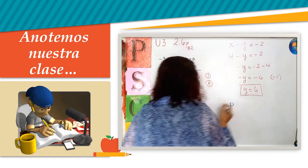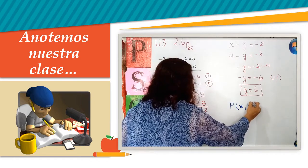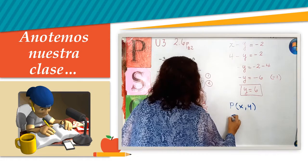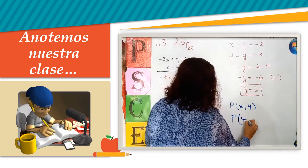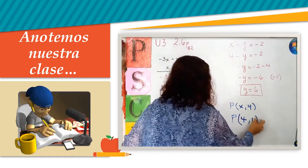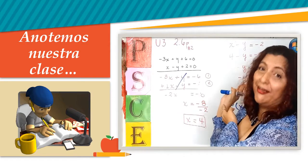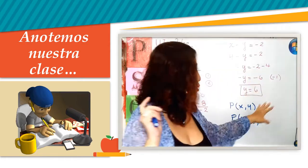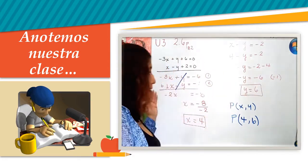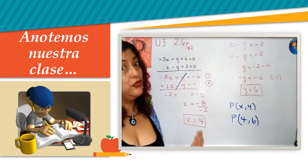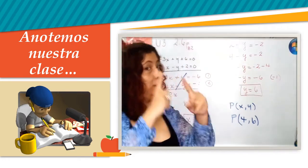Recordemos que los pares ordenados representan el valor de x y el valor de y. Por tanto, nuestro punto va a ser el valor de x, que vale 4 en este caso, y el de y, que vale 6. Si usted es un poquito curioso, se debe dar cuenta que el libro de texto nos da exactamente este par ordenado. ¿Qué he hecho? Resumir un poco, ser directos.